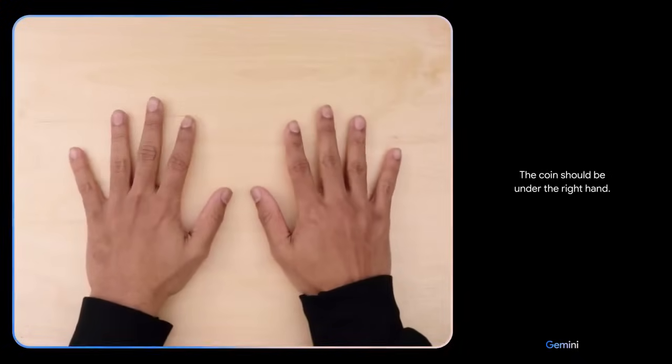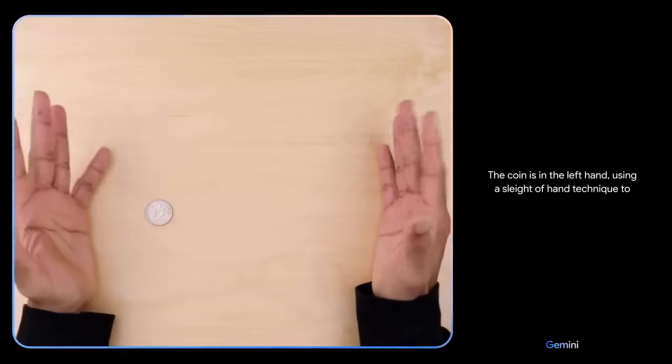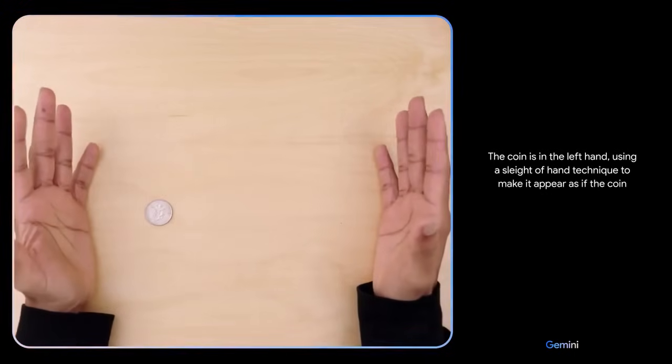The coin should be under the right hand. I don't know. The coin is in the left hand using a sleight of hand technique to make it appear as if the coin has disappeared.